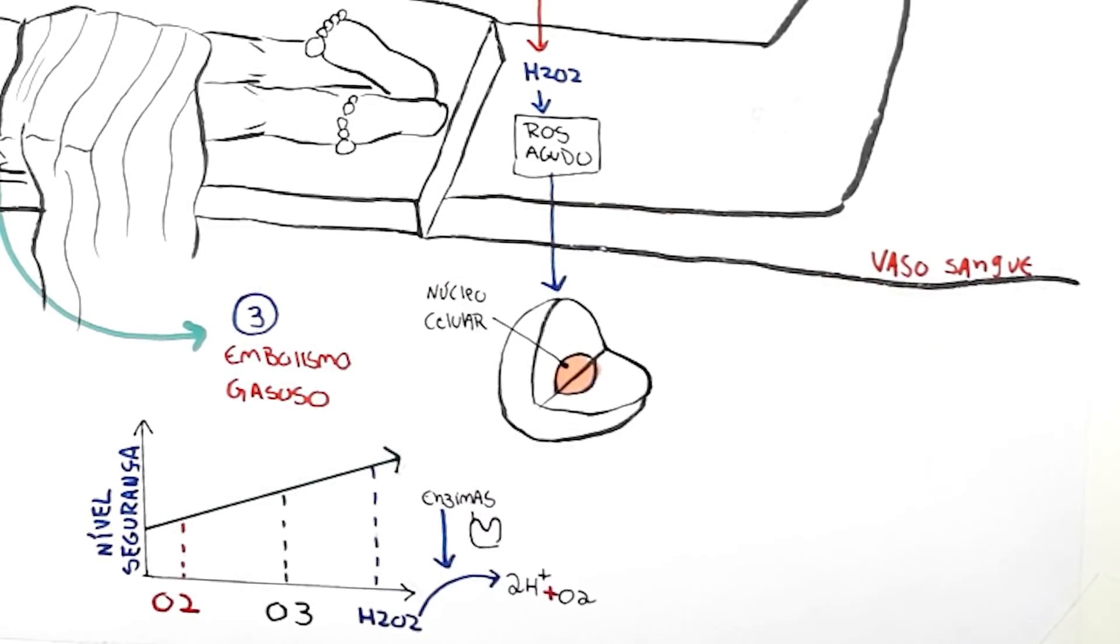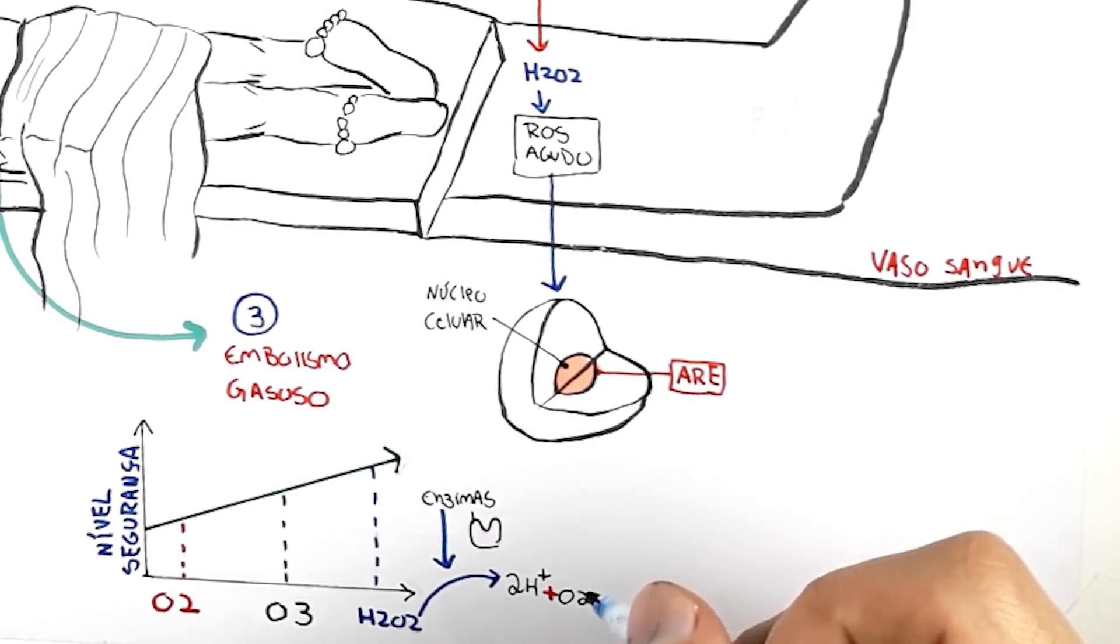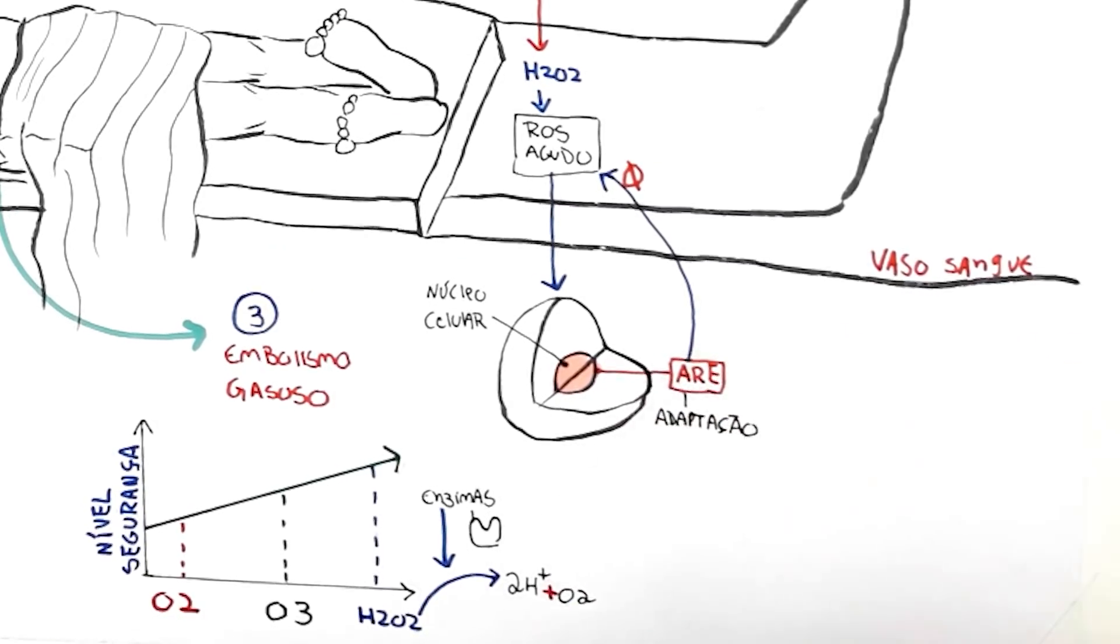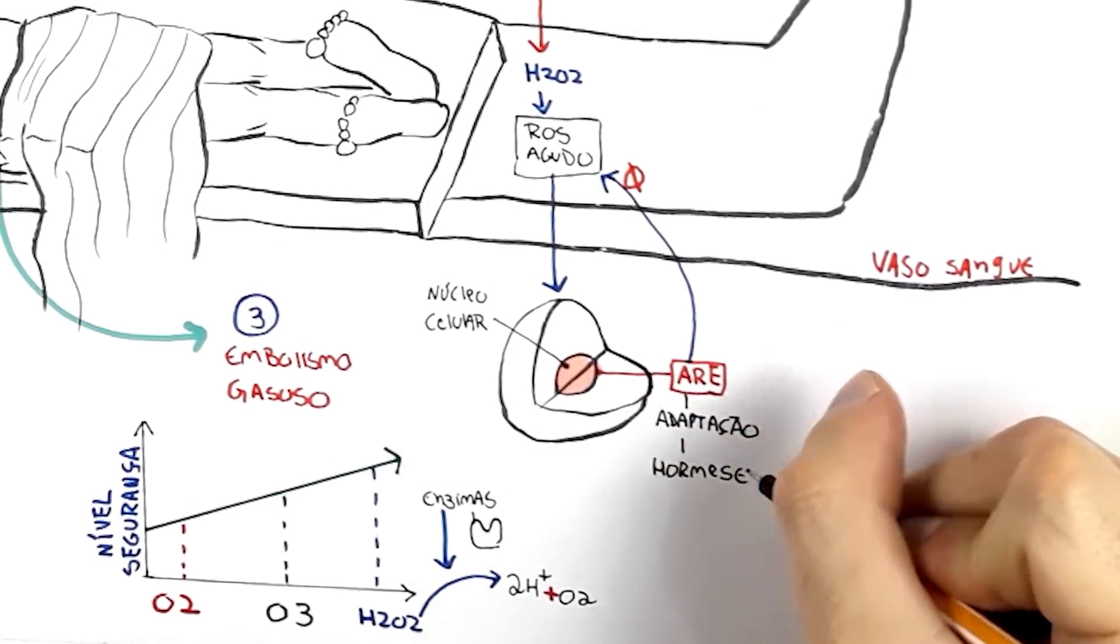It will then stimulate the formation of ARE, which is the antioxidant response element, to immediately neutralize this oxidation, maintaining the organism's balance and stimulating various positive factors. This is the famous hormesis mechanism. What doesn't kill me makes me stronger. In other words, a small, moderate and controlled dose of an adversity, which in this case is oxidation, will stimulate the body to self-protect and self-repair. It's something very interesting.